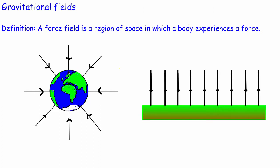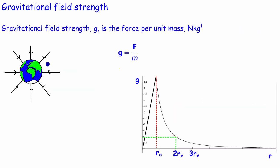It would be really nice to know exactly how strong this is, and just from these pictures we can't do that. So we're going to look at the gravitational field strength — in other words, how strong the gravitational field is at a certain point. The gravitational field strength is often given the symbol g, and it's defined as the force per unit mass, measured in newtons per kilogram.